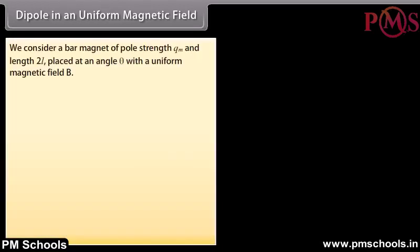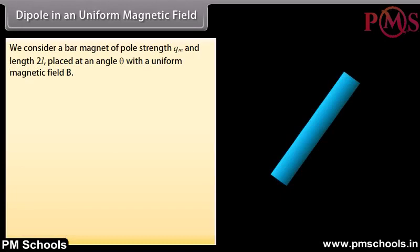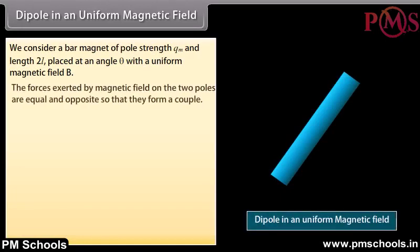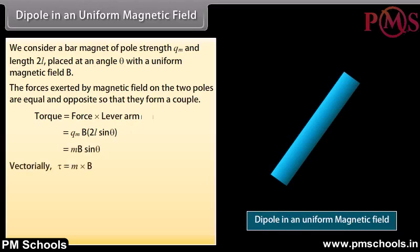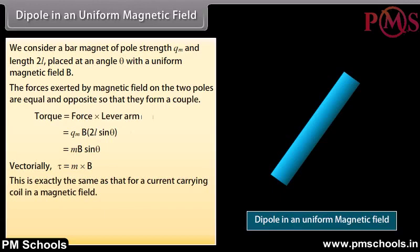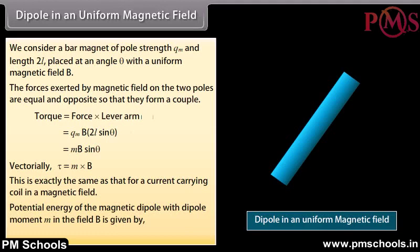Dipole in a uniform magnetic field: Consider a bar magnet of pole strength QM and length 2L placed at an angle theta with a uniform magnetic field B. The forces exerted by the magnetic field on the two poles are equal and opposite, forming a couple. Torque equals force times lever arm; putting in the values gives torque = MB sin θ. Vectorially, τ = M × B. This is exactly the same as that of a current-carrying coil in a magnetic field. The potential energy of the magnetic dipole with dipole moment M in field B is given by U = −M · B.